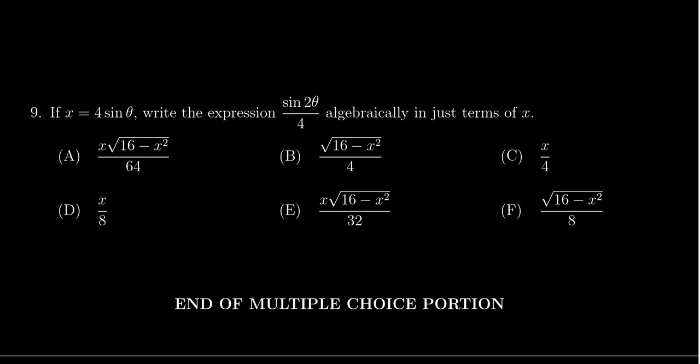In this video we present the solution to question number 9 from the practice exam number 2 for Math 1060, in which case we're given the trigonometric substitution x equals 4 sine theta and we're trying to rewrite the trigonometric expression sine of 2 theta over 4 using just the algebraic variable x.